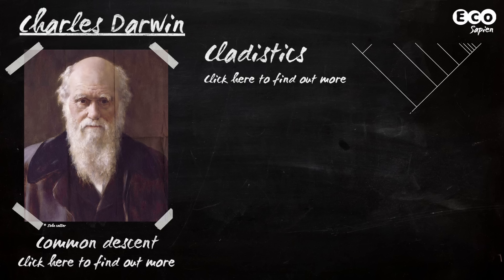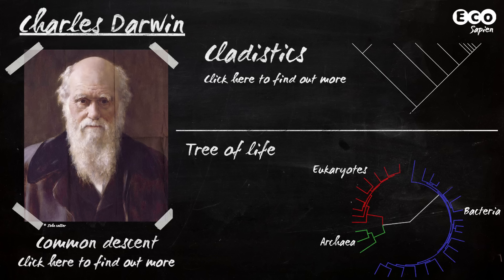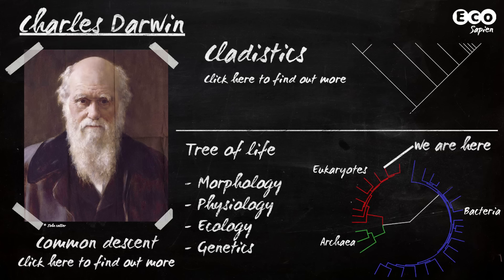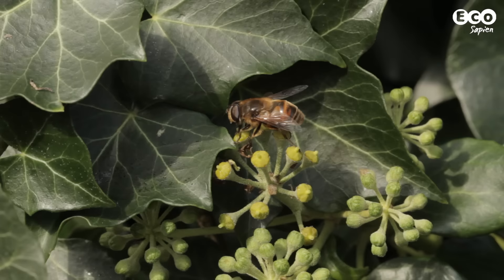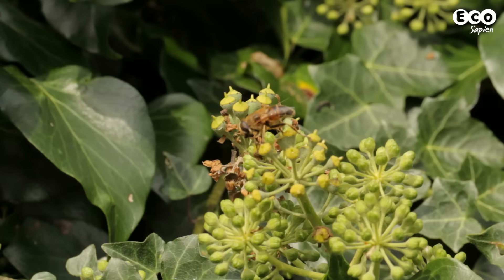His ranking system was much improved by Charles Darwin's principle of common descent and the onset of modern cladistics. Instead of organisms being grouped purely on shared characteristics, they were now grouped according to evolutionary relatedness, using evidence from multiple fields. So, what are the ranks that Linnaeus came up with? Well, let's go back to our dronefly.